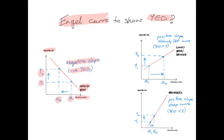What about a luxury good or a service? Luxury goods and services tend to have a high income elasticity of demand, much higher than one. They will have a positive slope. Because luxury goods and services are income elastic, they have a relatively flat curve. You can see when income rises from Y1 to Y2, quantity demanded increases by a much more proportionate increase from Q1 to Q2.